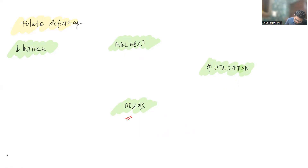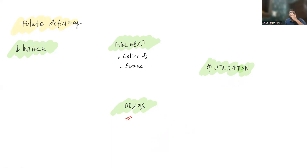Certain malabsorption conditions can also cause folic acid deficiency — like celiac disease and tropical sprue. Celiac disease predominantly affects the duodenum but sometimes the jejunum as well, so along with iron deficiency anemia it can cause folic acid deficiency. Tropical sprue affects the distal small intestine involving both jejunum and ileum, so it can cause both B12 and folic acid deficiency.